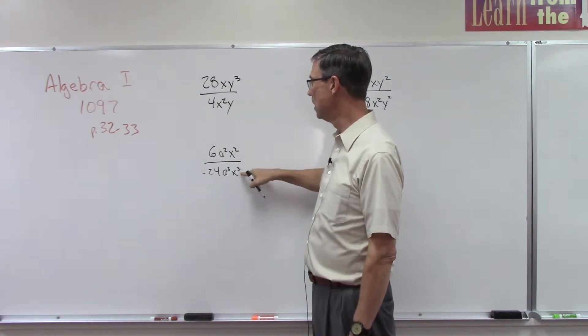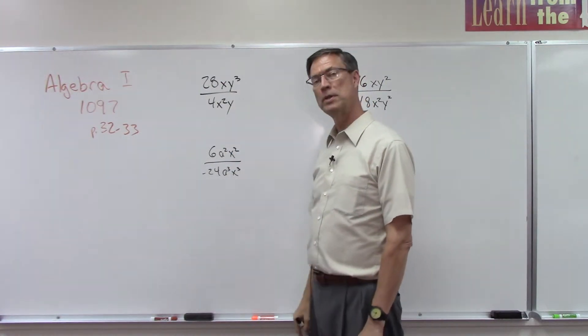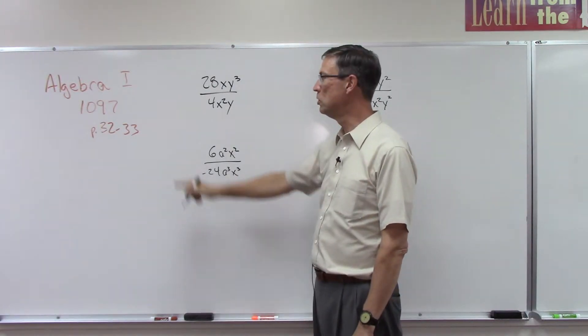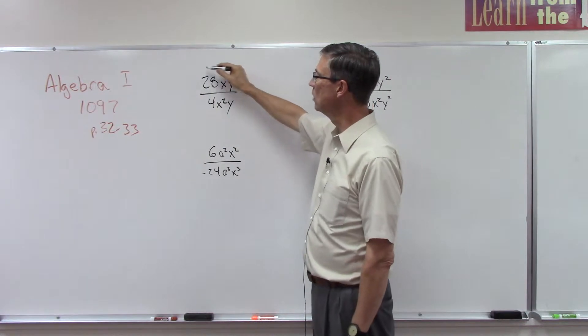Here we're going to have some times where the variable on the bottom is larger than the one on the top. It's a little different. We want to follow the rule here on page 32.